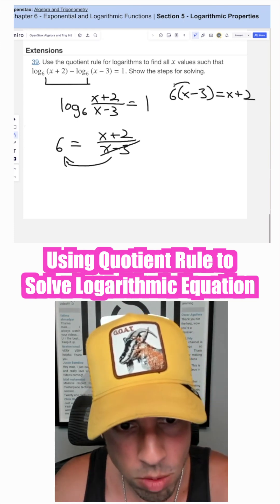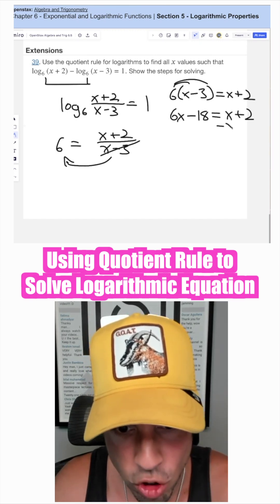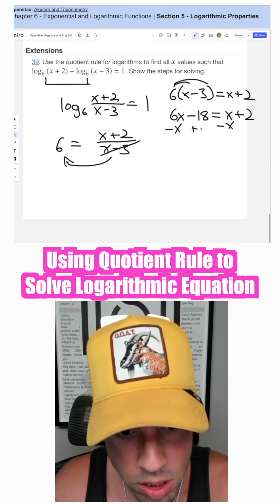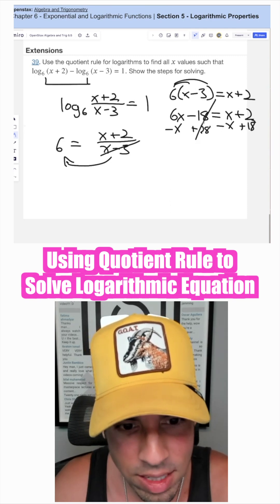Then we're going to distribute: six x minus 18 equals x plus two. Then I'm going to subtract x from both sides while simultaneously adding 18 to both sides. Six x minus x is five x, those cancel out, two plus 18 is 20.